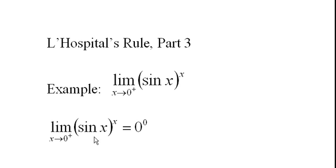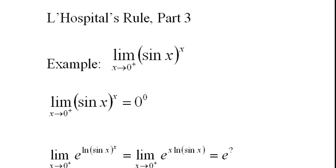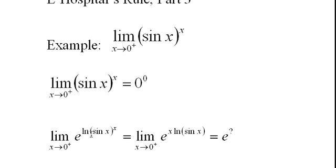The way we handle these kinds of problems where you have f to the power of g of x is you write it as e to the log of sine of x to the x. Now, we know that these are inverse of each other, e to the x and log of x. So this will always cancel out down to sine of x to the x. So there's no difference in this expression and this expression. But what we can do is we can bring the exponent out front, x log sine of x. And then we're only concerned with the exponent.